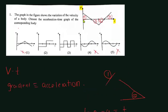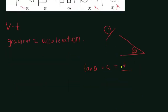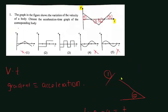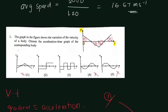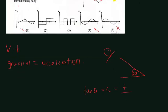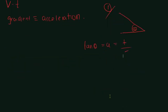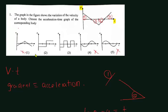For the next part, we have a lower value minus a higher value. Tan theta means opposite over adjacent. The opposite is a lower value minus a higher value, which means it is negative. So the acceleration of the first part will be negative. Both options we are considering show negative acceleration for the first part.